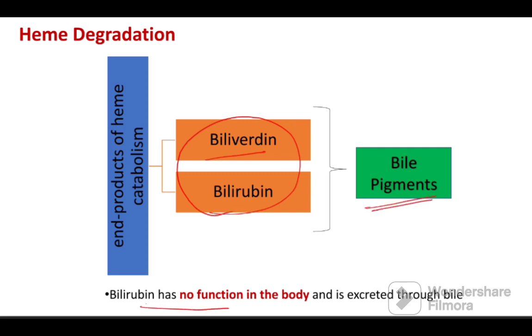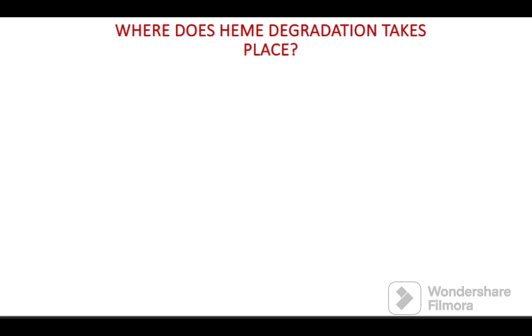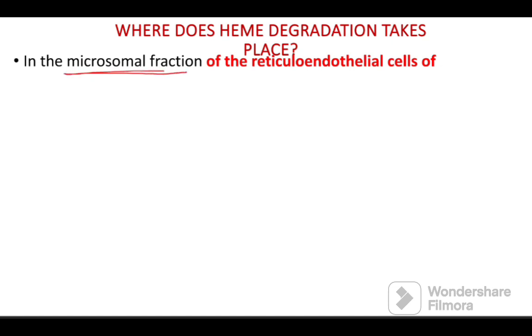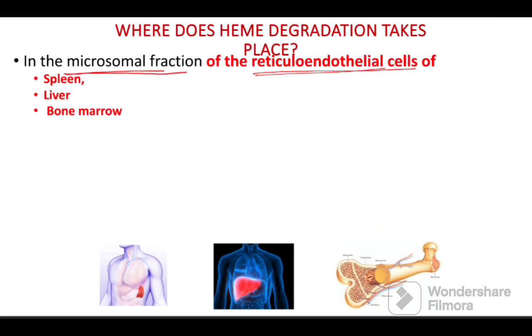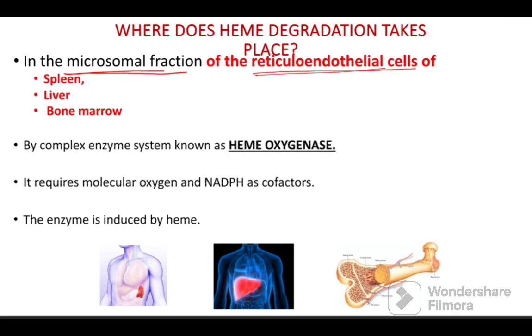Bilirubin has no function in the body and must be excreted through bile. Heme degradation takes place mainly in the microsomal fraction, or the macrophages of the reticuloendothelial cells of spleen, liver, and bone marrow. This occurs with the help of a complex enzyme system known as heme oxygenase, which is mainly responsible for degradation of hemoglobin.